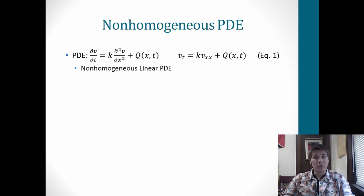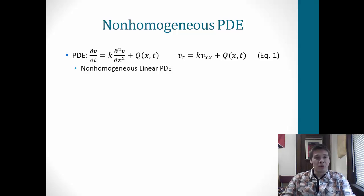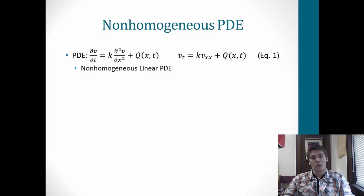For this, we'll be talking about non-homogeneous PDEs — partial differential equations. For us, this will actually be a linear PDE. This is given by: partial v with respect to t equals some constant k times the second partial v with respect to x, plus some function q. So this is linear and non-homogeneous. It can also be written as v_t equals k·v_xx plus q using subscript notation. This is equation 1, and this is what we're starting with.